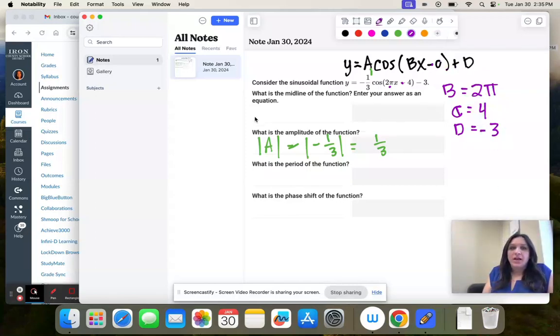So that's the midline. The midline is equal to y equals d. So it's y equals negative three.